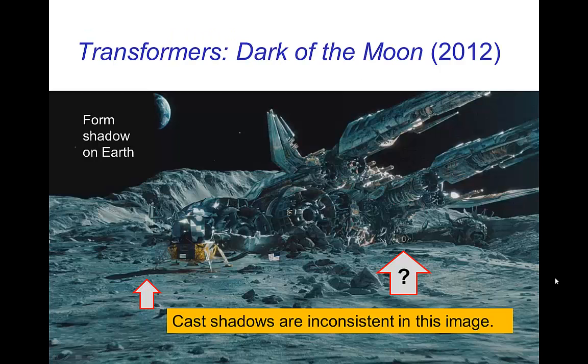Here's an image from the Transformers Dark of the Moon film, and there's some interesting shadows here, not all of them consistent. The form shadow on the Earth in the scene looks quite good.